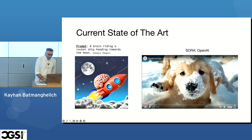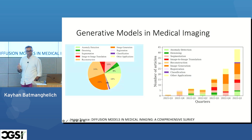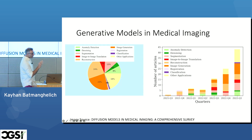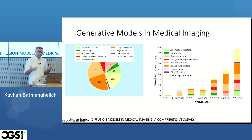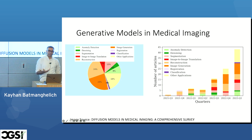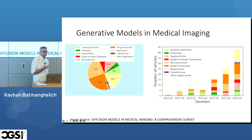This progress has also arrived in medical imaging. This is just a snapshot from 2021 to 2023, specifically for diffusion models, which are one subcategory of generative models. The colors represent different applications in medical imaging, ranging from image segmentation, classification, explanation, and denoising. I'm going to give you a couple of examples that hopefully convince you there are real applications in this field.